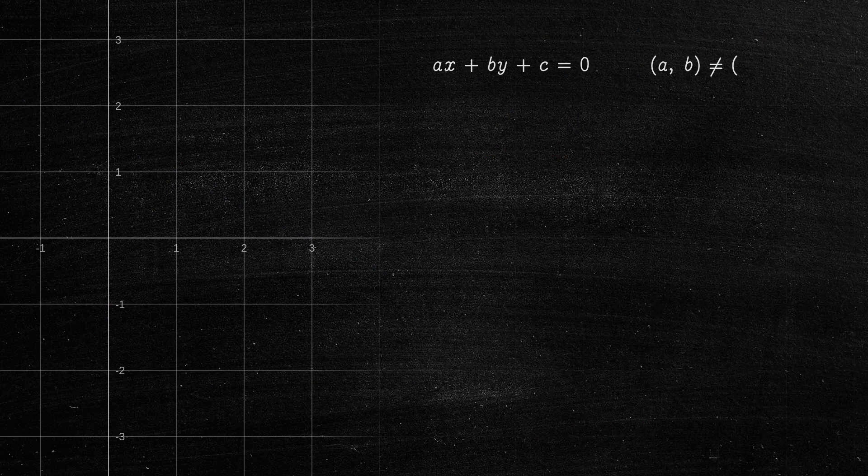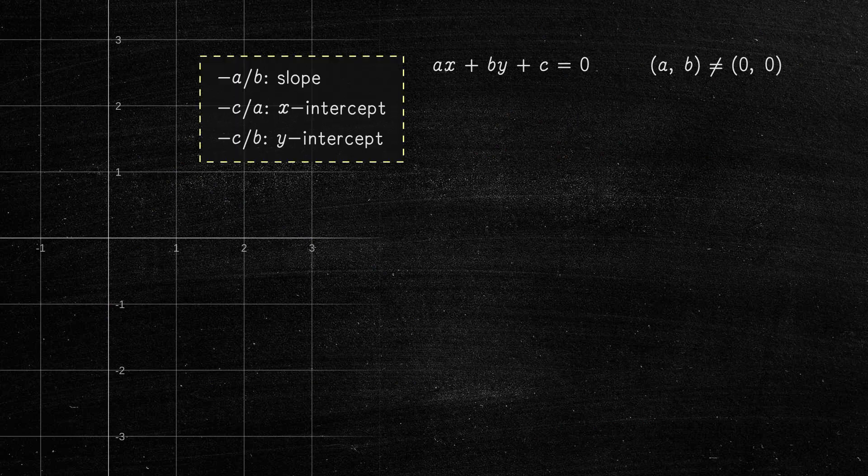The second way is when the lines are in the so-called general form. The parameters of this line are easily interpreted. Minus A over B is the slope. Minus C over A is the x-intercept.